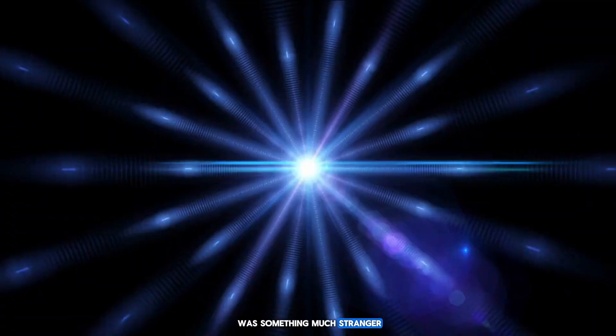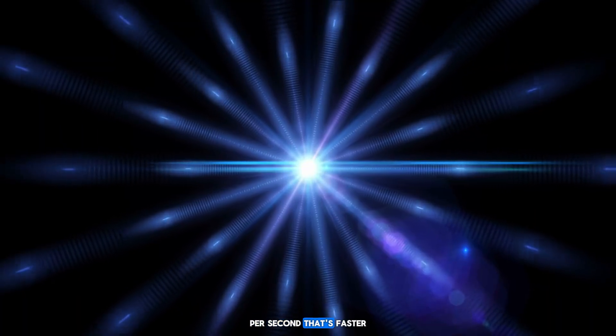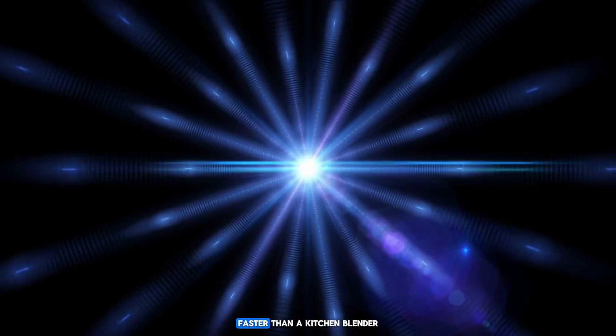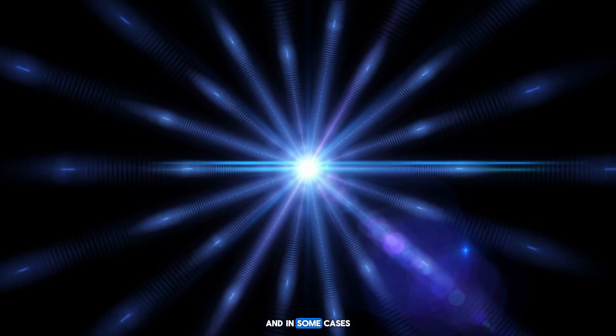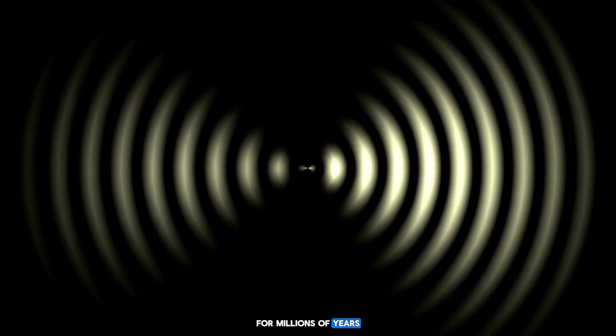Later we managed to figure it out. It wasn't ET—it was something much stranger. These objects rotate at hundreds of revolutions per second, faster than a helicopter, faster than a kitchen blender, and in some cases even faster than a jet turbine. They are cosmic flywheels that rival man-made machines in terms of speed and endurance. And they don't slow down easily. Many of them have been spinning like this for millions of years, maintaining these speeds thanks to their enormous angular momentum and low energy losses.